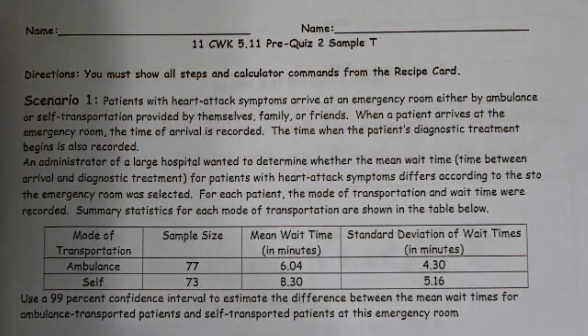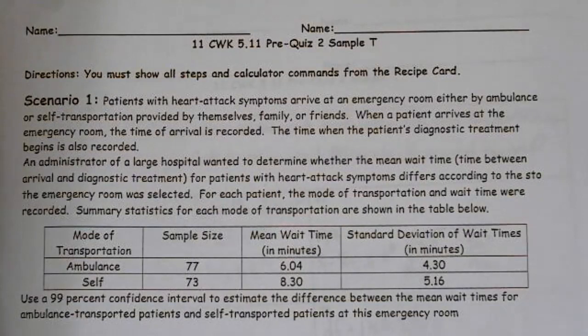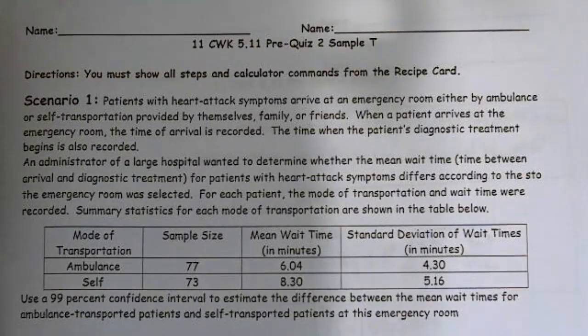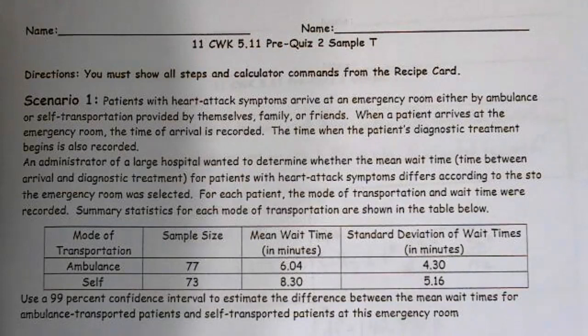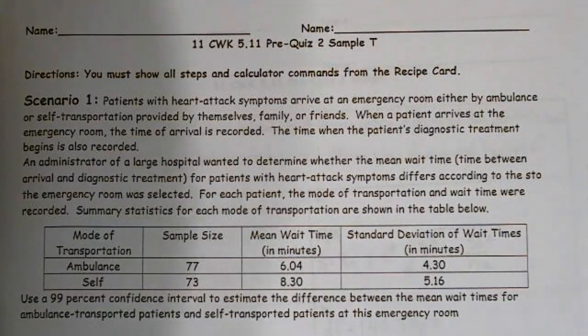Hello, this is your Stat Sensei, Mr. Spencei, and we're going to go over the pre-quiz. So patients with heart attack symptoms arrive in an emergency room either by ambulance or self-transportation provided by themselves, family, or friends. Incidentally, you need to make sure you write this down on a separate sheet of paper and you will turn this in on Wednesday.